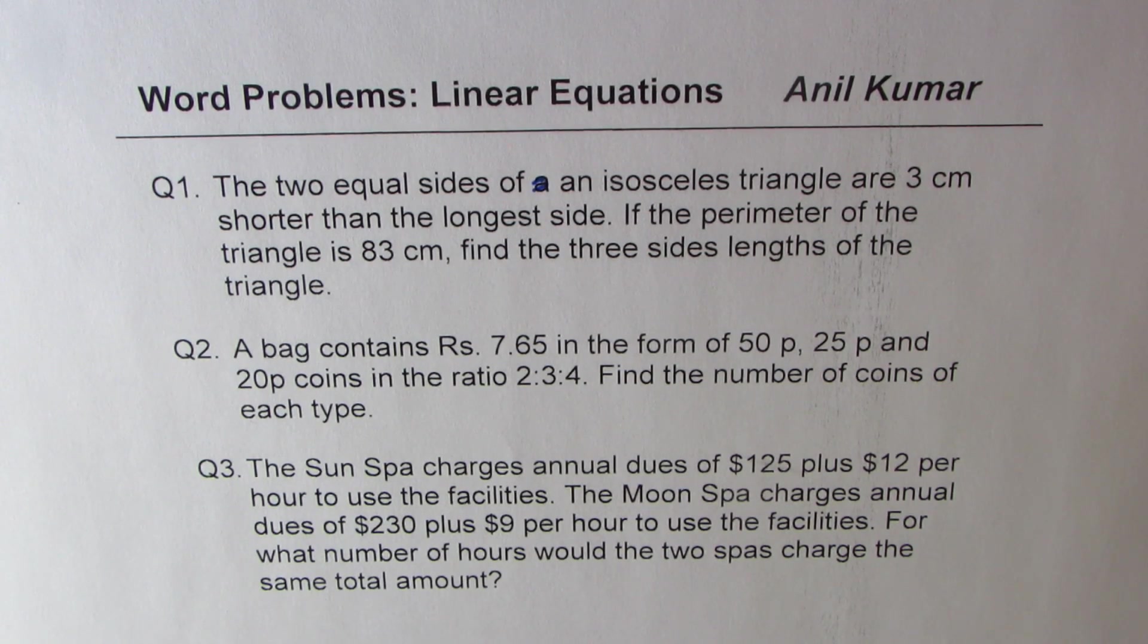Question number three. The sun spa charges annual dues of $125 plus $12 per hour to use the facilities. The moon spa charges annual dues of $230 plus $9 per hour to use the facilities. For what number of hours would the two spas charge the same total amount?